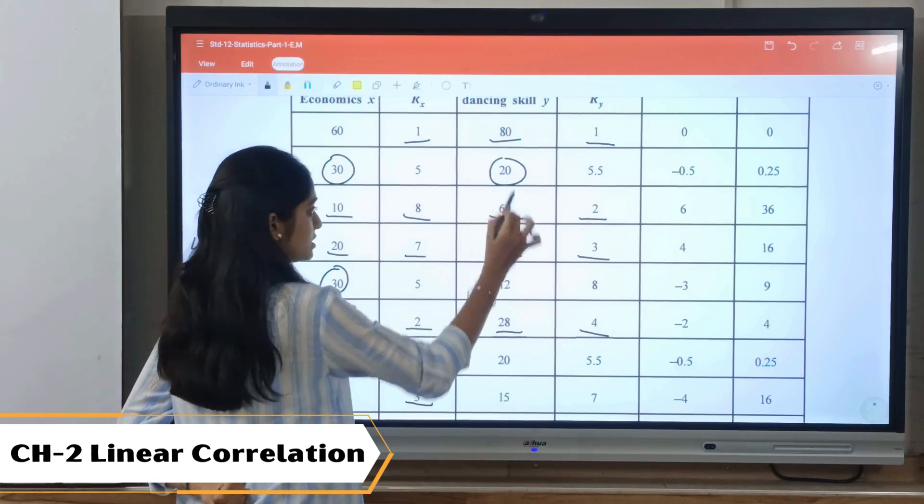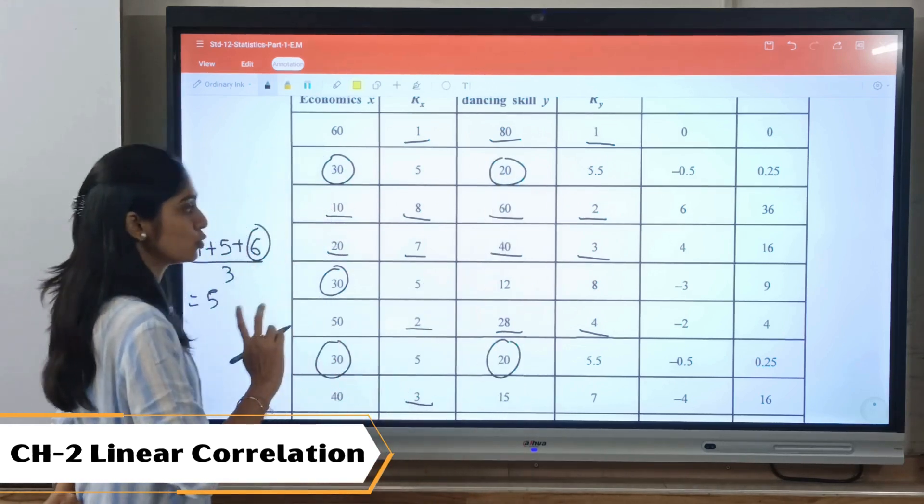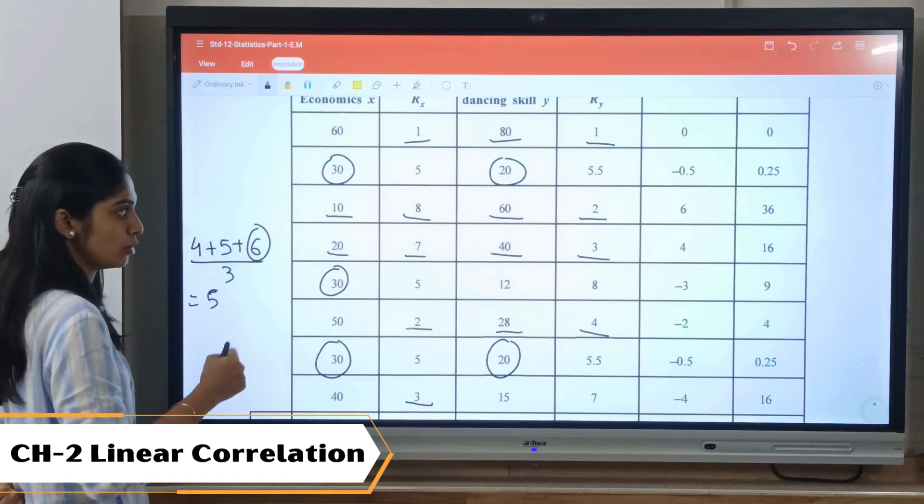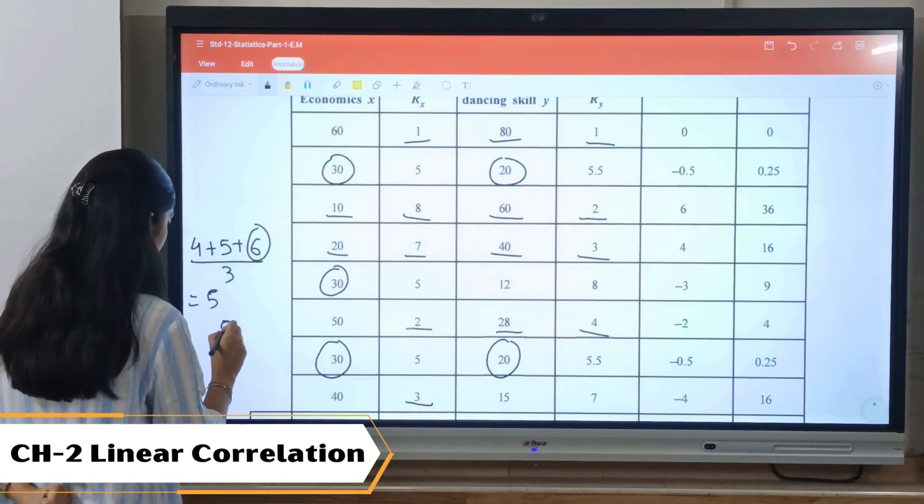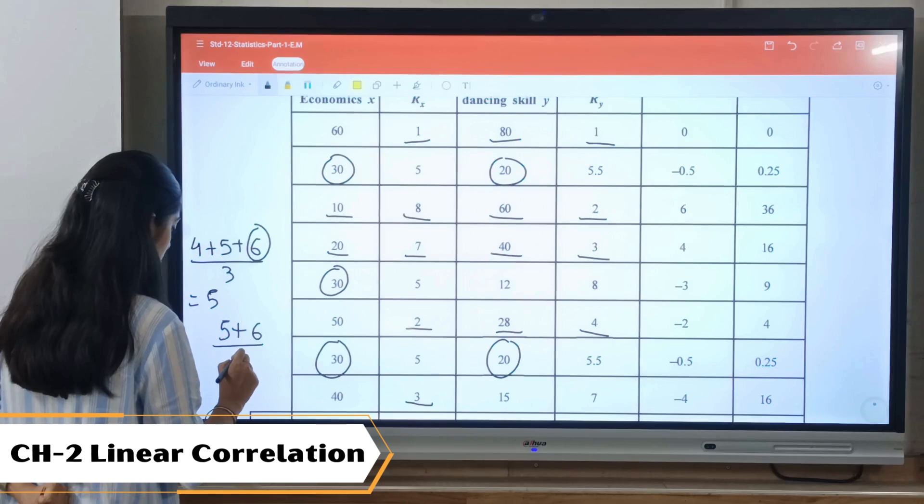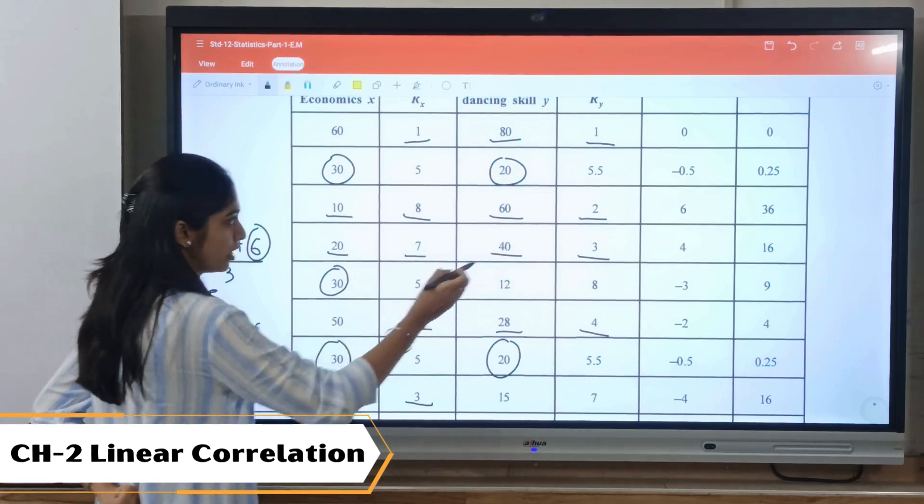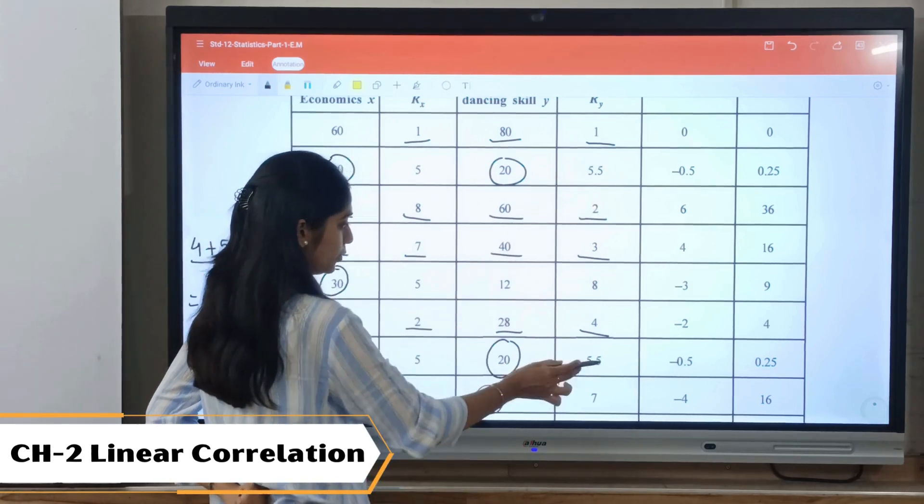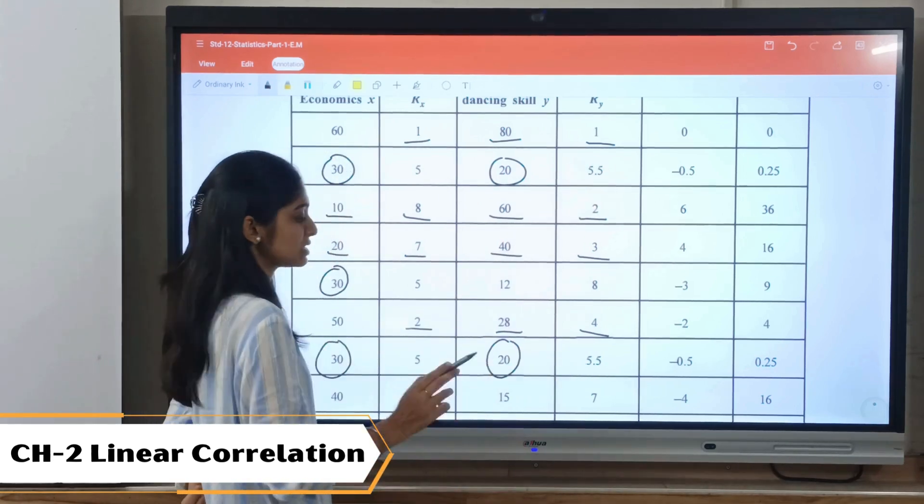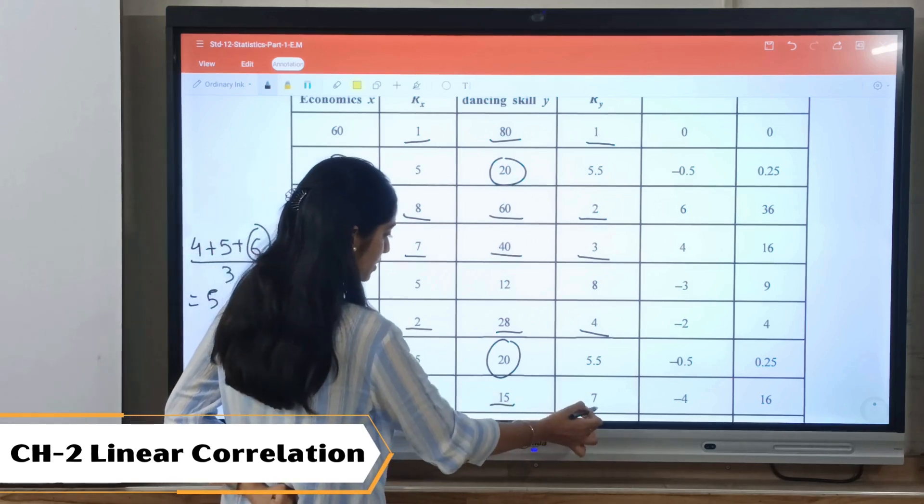Now in fifth rank we have 20, which is repeated twice. So two ranks we are supposed to distribute among 20. So five plus six divided by two, that is 5.5. So 5.5 will be distributed between 20 and 20. Then next we'll be assigning seventh rank, that is 15 will be given seventh rank, and 12 will be given eighth rank.